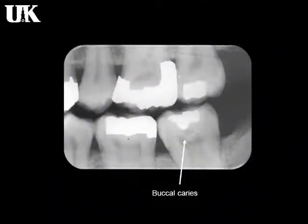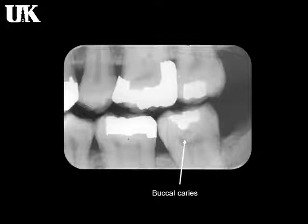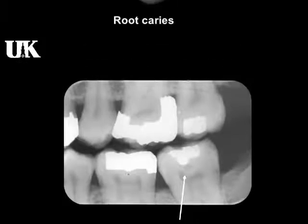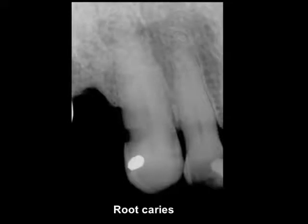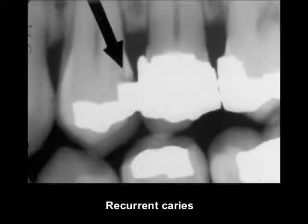Facial and lingual caries shows round lesions on radiograph that enlarge to become elliptical or semilunar in shape, with well-defined non-carious enamel around the radiolucency. When superimposed on the DEJ, they may mimic occlusal caries. Root surface caries, also called cemental caries, has an incidence of 40% to 70% in the aged population and appears as an ill-defined saucer-like radiolucency. Recurrent caries occurs immediately next to a restoration, results from micro-leakage or residual caries, and its radiolucency depends on the amount of demineralization and extent of the restoration.